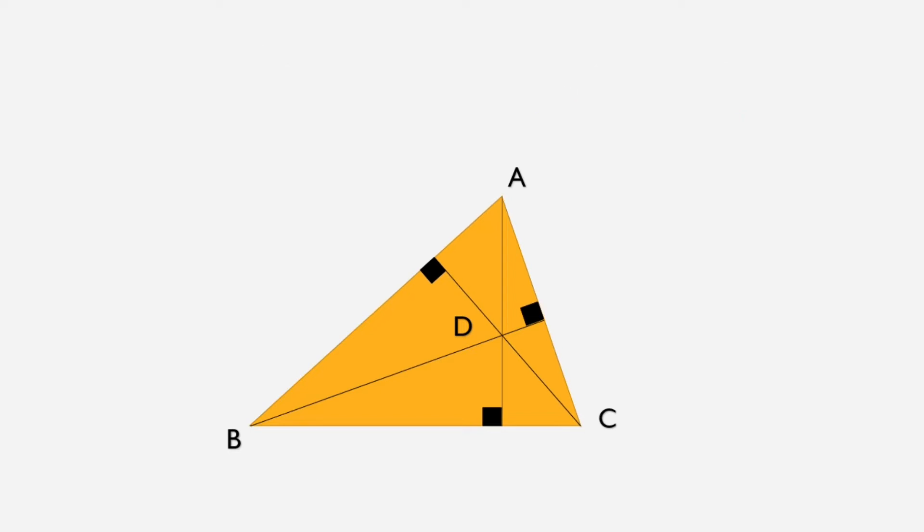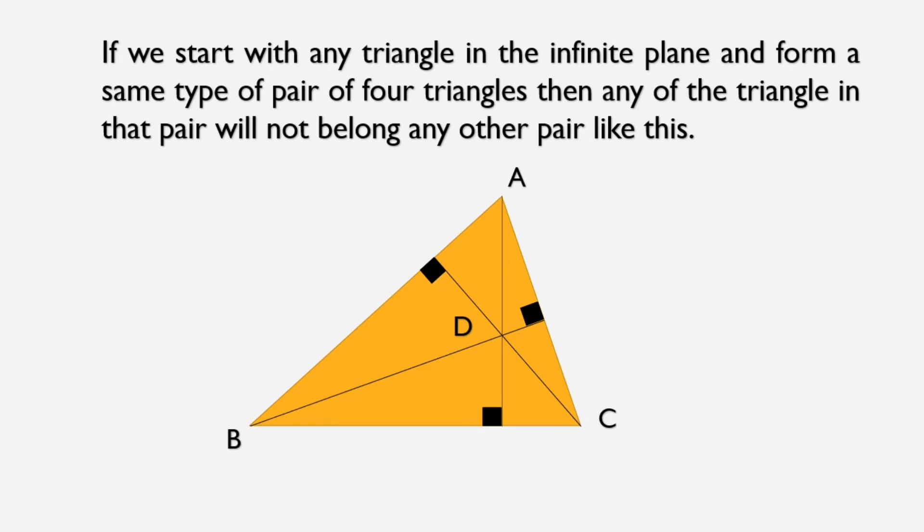And if we start with any triangle in the infinite plane and form a same type of pair of 4 triangles or 4 points then any of the triangle in that pair will not belong to any other pair like this because if we start with ADB then definitely it will give ABC, ADC and BDC. And if we start with BDC then it will give the triangles of this pair only. And if we start with any other triangle except these 4 triangles then in that pair none of this triangle will be there. Hence we can say that it is the only pair in which triangle ABC belongs or BDC belongs or whatever these 4 triangles belong.